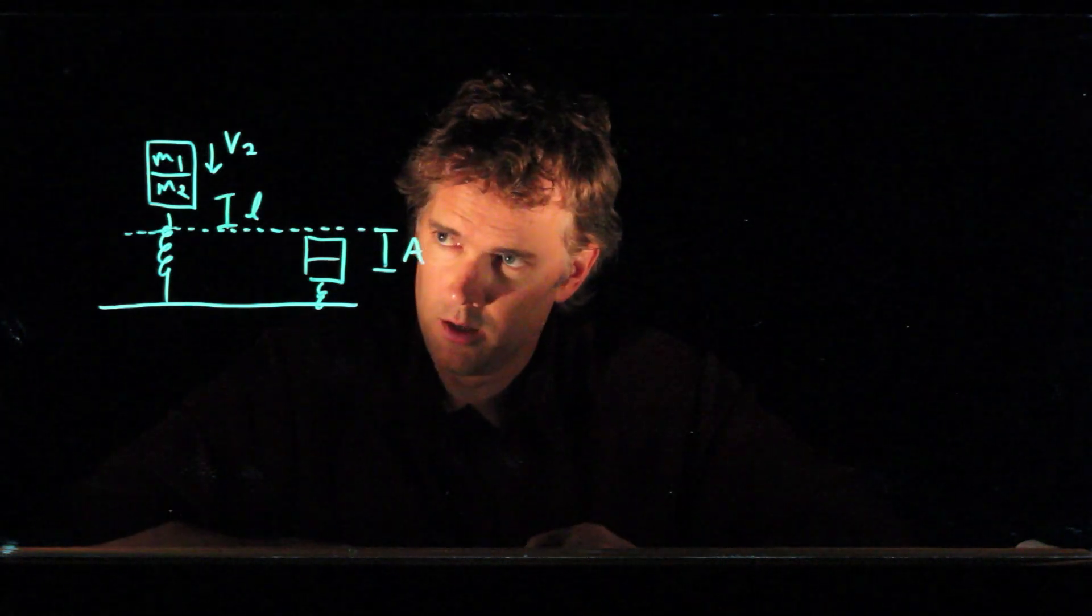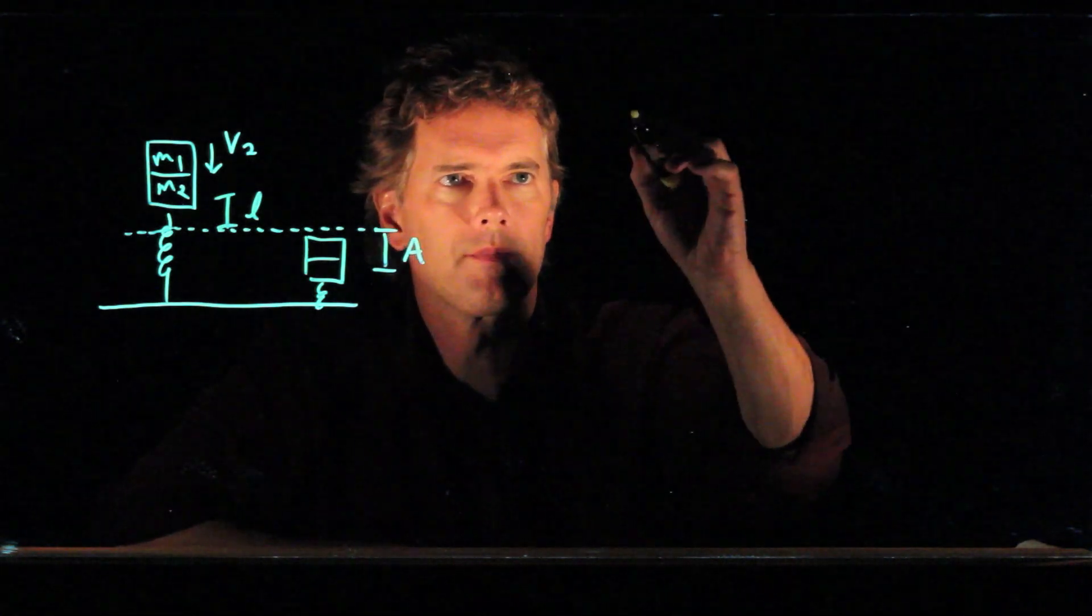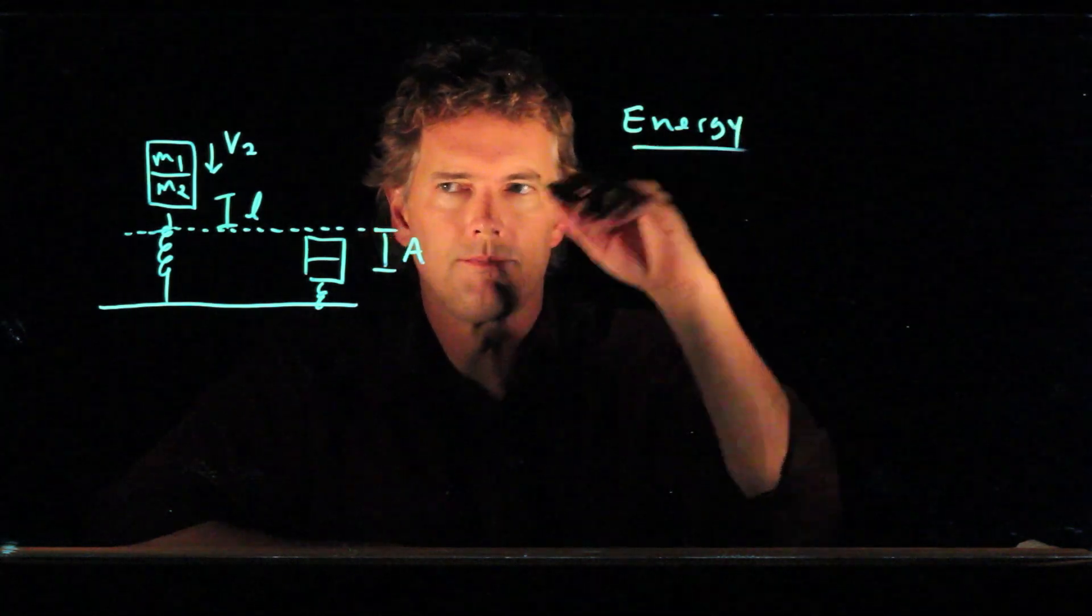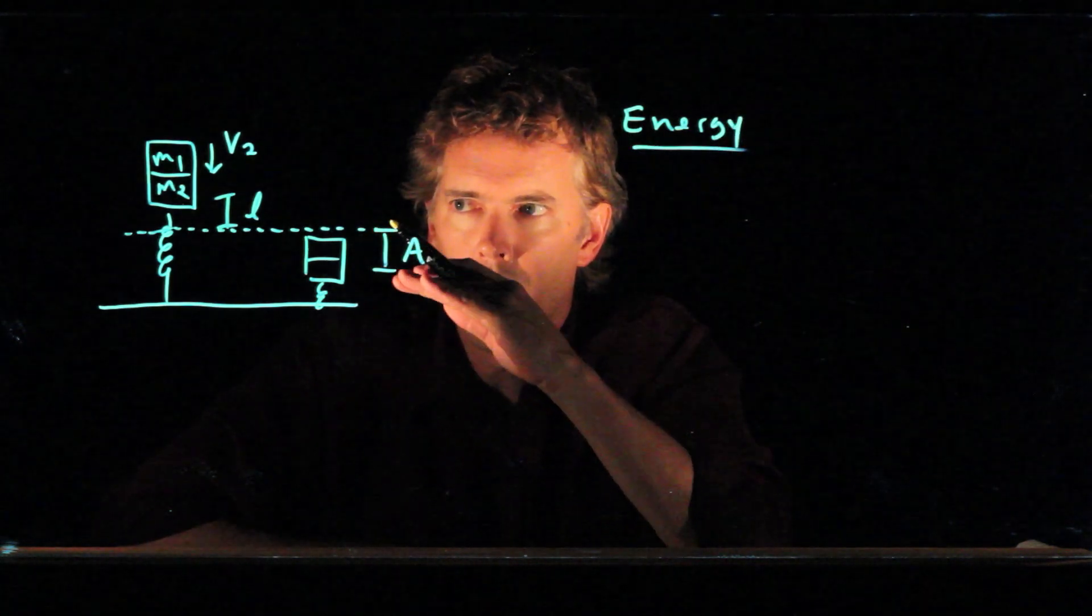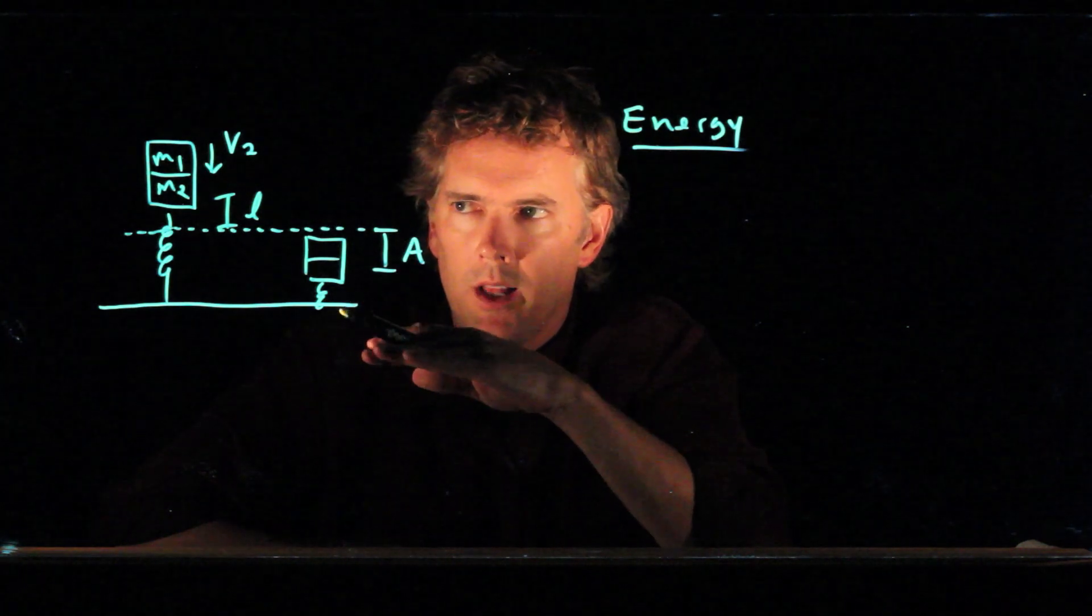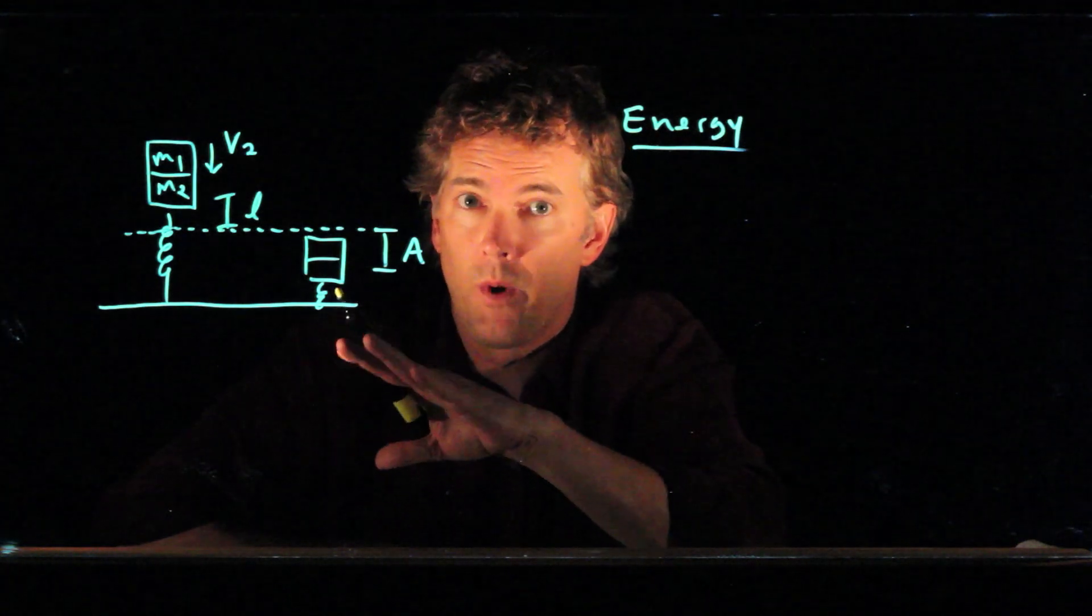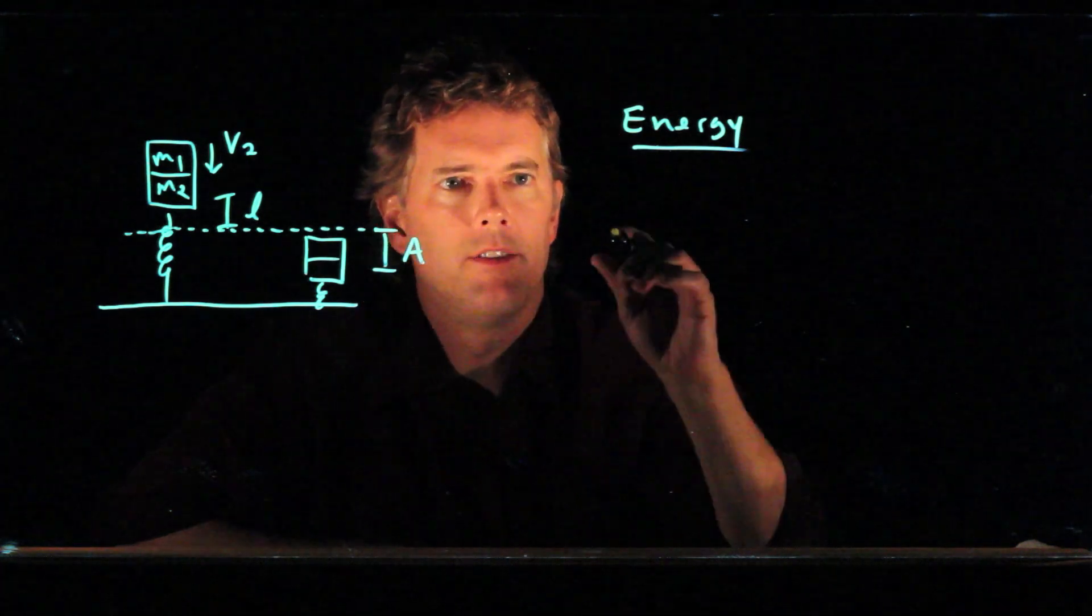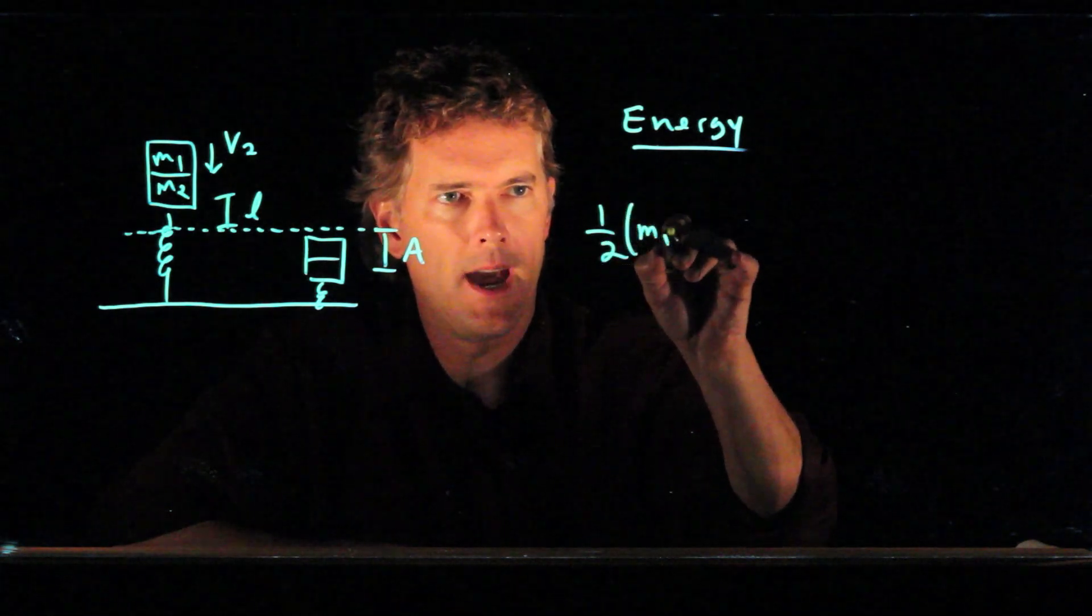Let's take a look at conservation of energy here and see what happens. One thing that we said was on a vertical spring system, the new equilibrium position is going to be a little bit lower. If we measure everything relative to that new equilibrium position, we can ignore gravity. Initially, in that picture, we have kinetic energy. We have two masses, M1 and M2, and they are moving at a speed V2.